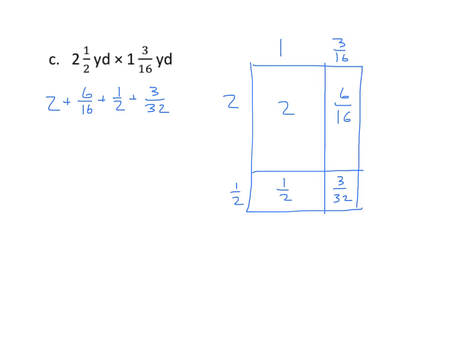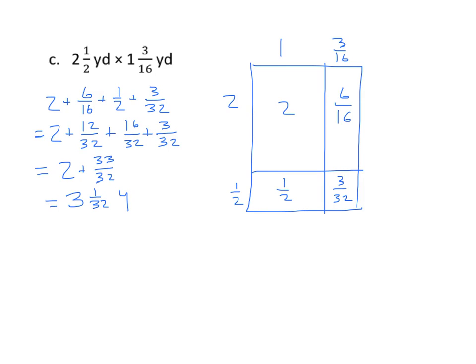We could change these all to thirty-seconds right off the bat, and that's what I'll do, since sixteen times two is thirty-two. Six-sixteenths becomes twelve-thirty-seconds. One-half, since two times sixteen equals thirty-two, becomes sixteen-thirty-seconds. And we have our three-thirty-seconds. Now that we have common denominators, we can simplify the sum. Twelve plus sixteen is twenty-eight, plus three is thirty-one — wait, twelve plus sixteen is twenty-eight, plus three is thirty-one. So I have two plus thirty-three thirty-seconds, which equals three and one-thirty-second square yards.